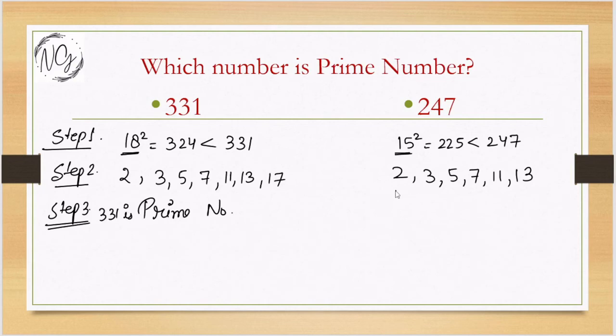Now here in this, you will see that 13 can divide 247. This number you can divide. We know that 13 multiplied by 19 will be 247. So here you get a number which can divide this number, so in this case this number is not prime.